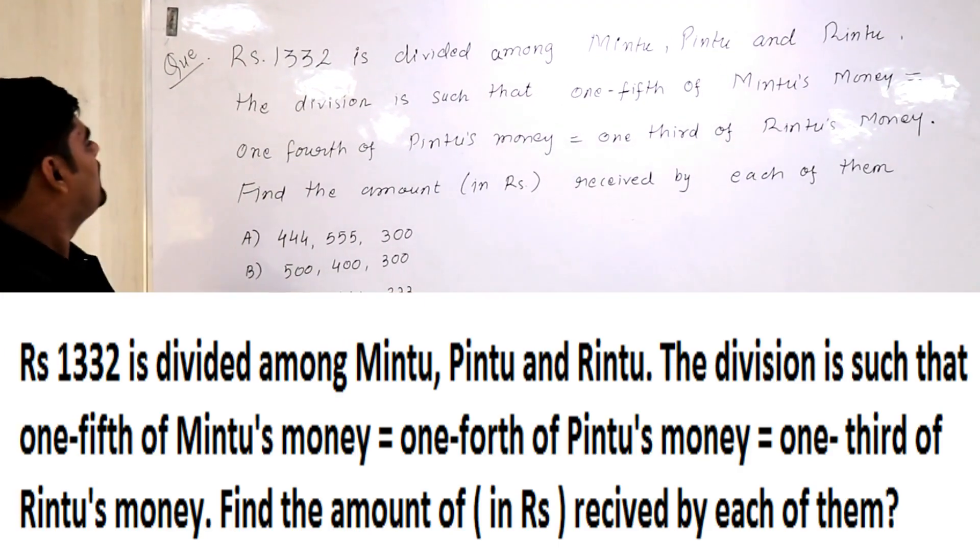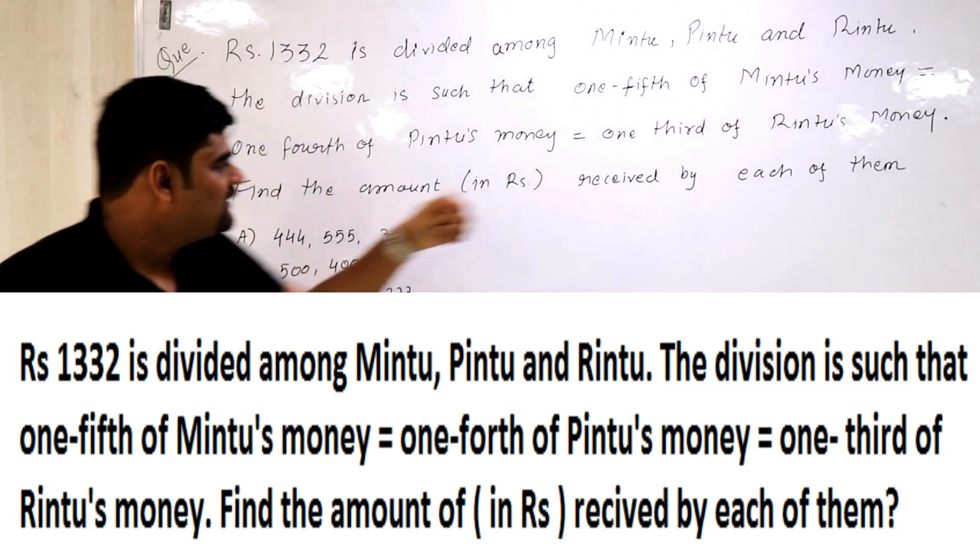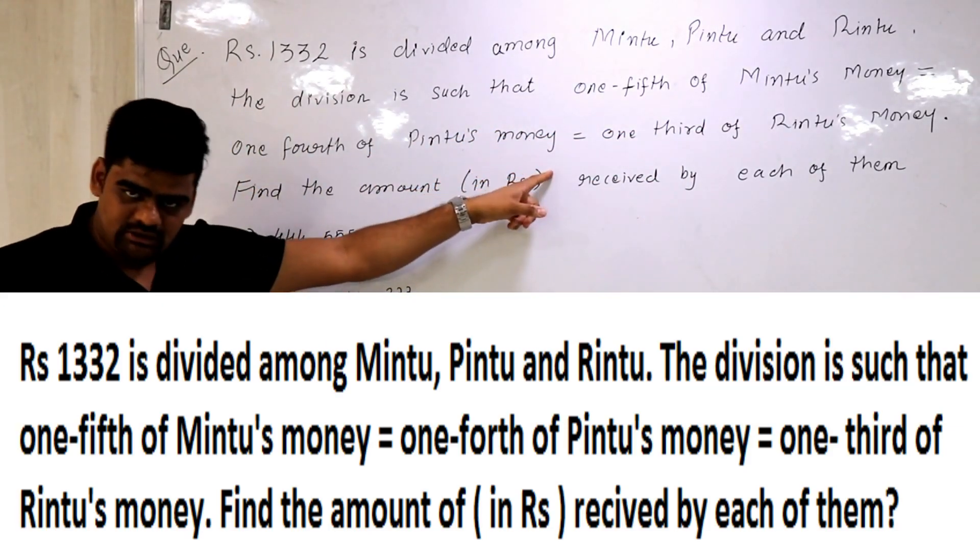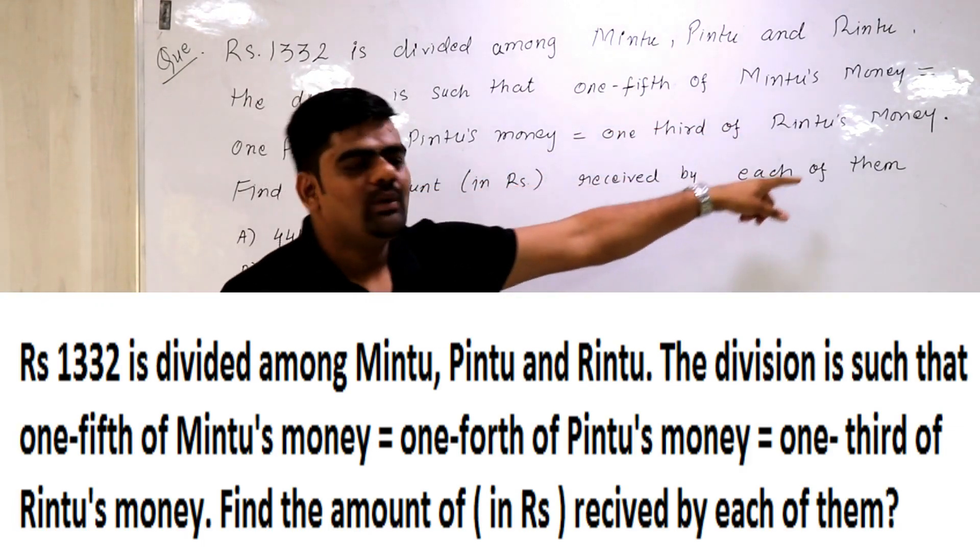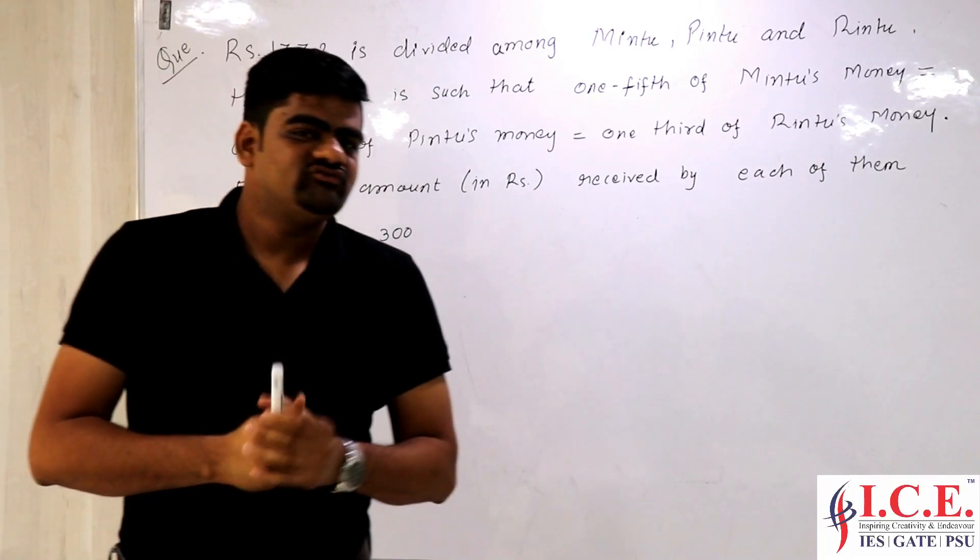The question says Rs 1332 is divided among Mintu, Pindu and Rindu. Their division is such that one-fifth of Mintu's money equals one-fourth of Pindu's money and equals one-third of Rindu's money. Find the amount of money received by each of them.